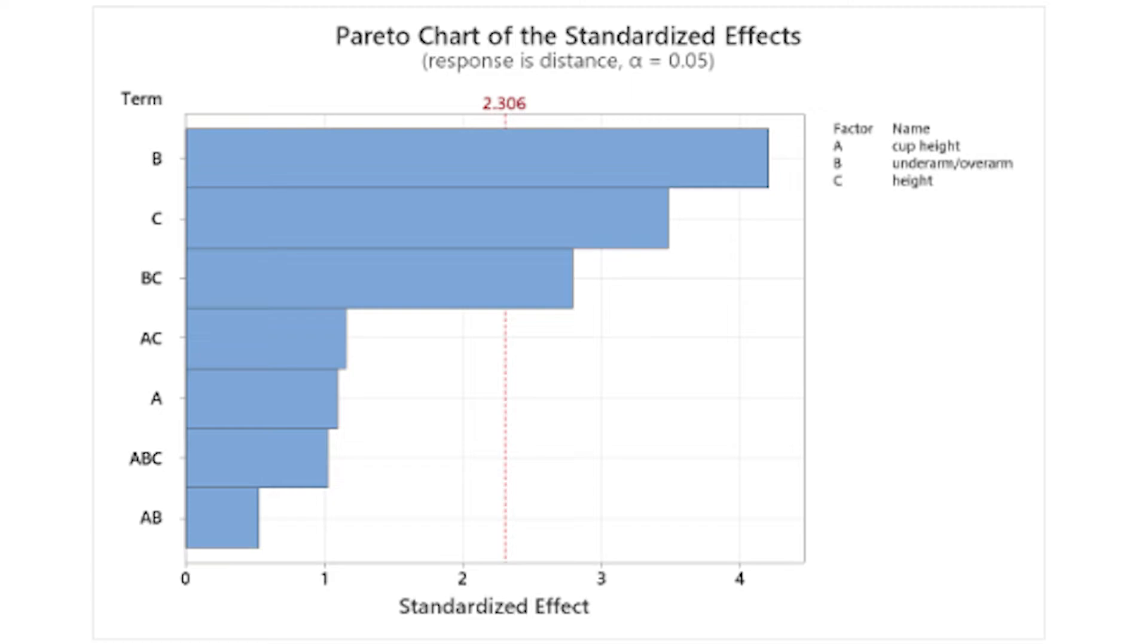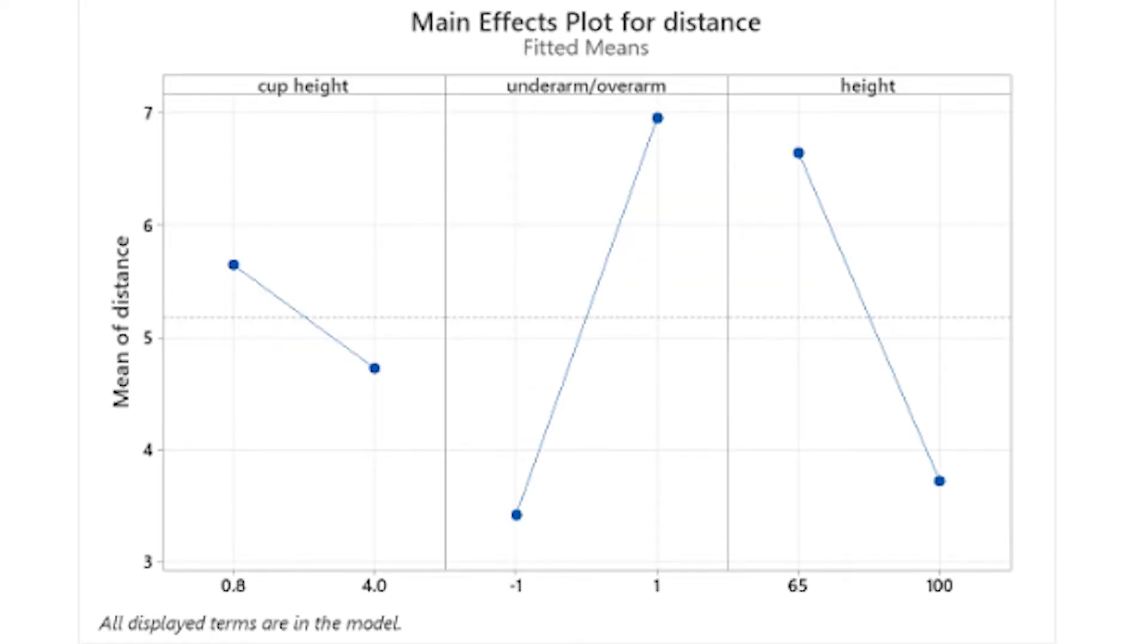From the Pareto chart, we see that the underarm and overarm throwing technique, as well as the throwing height, are their main effects. And the interactions are statistically significant, as indicated by the elements crossing the red line. From the main effects plots, we see that the throwing technique of underarm or overarm and throwing height are major factors. If the throw is underarm, there is a higher likelihood of the ball landing closer to the cup. And if the throwing height is a little bit higher, then there is also a higher likelihood of the ball making into the cup.